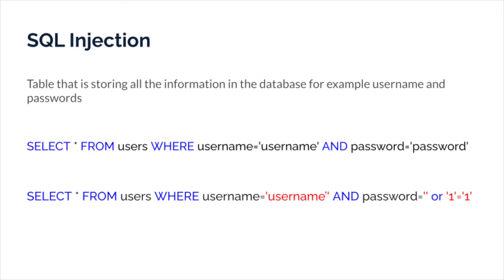If you're able to manipulate this query, what you could do is in the password field, instead of just putting a password, you can inject — for example, adding an apostrophe OR 1=1. Since 1 is always equal to 1, if the application is vulnerable to SQL injection, the condition becomes true. This would void the password check and return a list of all users, giving you all the information you're looking for if it successfully executes. This is one way the query could be manipulated.